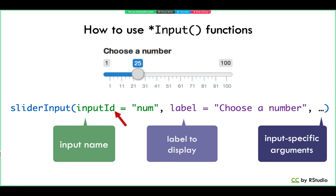Finally, each input function takes additional arguments that help define how the input object should do its job. For example, a sliderInput needs to know its minimum value, maximum value, and initial value, but those arguments wouldn't make sense for an action button. If you want to know what specific arguments to use with a specific input function, you can just look at the help page — type a question mark and the function name into your console prompt to pull up all the different options.